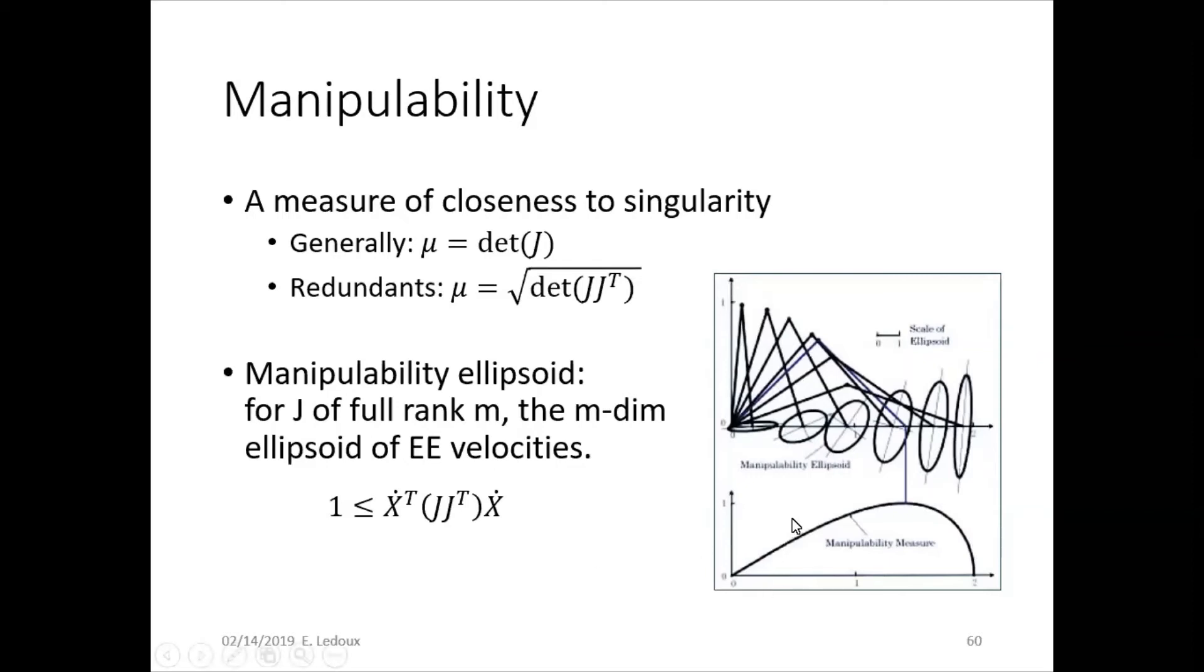If we look at this picture, if mu is zero, then you're really close to a singularity. You can see that the oval gets pretty squished, and if mu is one, you're right there in the sweet spot, and you're not close to a singularity, and you can get a pretty big range out of the end effector.